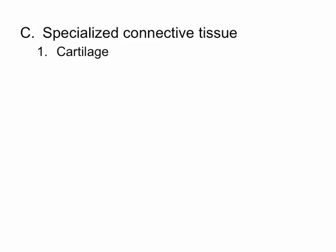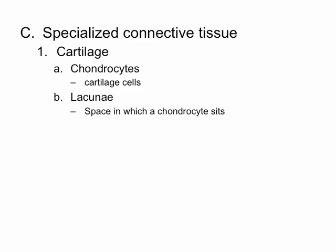There are also specialized connective tissues. Cartilage is one — it has cells called chondrocytes. 'Chondro' refers to cartilage and 'cyte' refers to cell, so chondrocytes are cartilage cells. The chondrocytes sit inside a space called a lacuna. Going back to the jello analogy, the matrix is the jello and the chondrocytes are the fruit. If you pulled a piece of fruit out of the jello, the space left behind would be analogous to the lacuna.